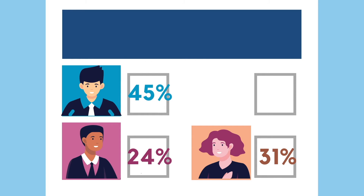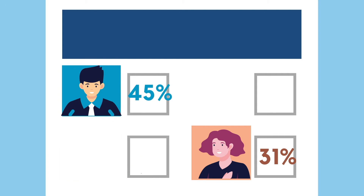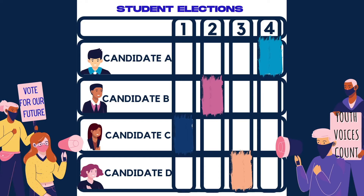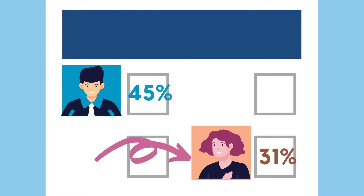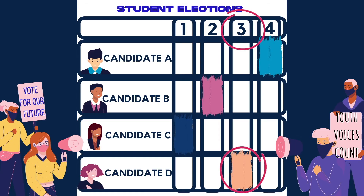Brian will be the next one eliminated, because there's still not a majority. Brian, with the lowest number, is removed from the vote. The same process happens — it goes to the next ranked choice on your list, which in this case would be Denise. If your top choice candidate is eliminated, your vote goes to the next highest ranked candidate on your ballot. So now your vote goes to Denise, while other votes go to Alex.